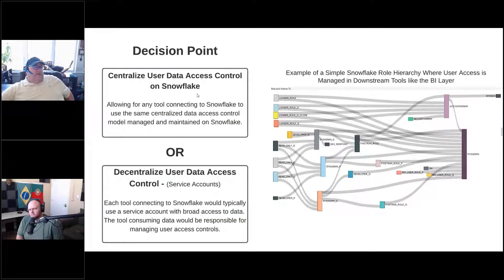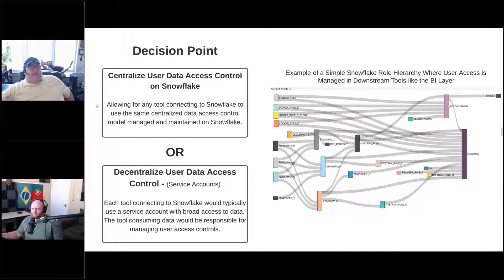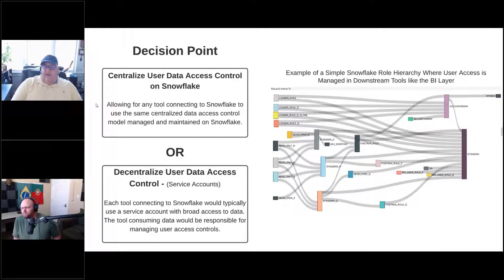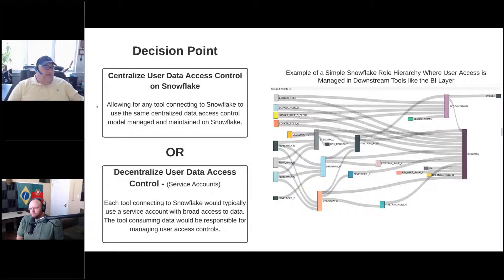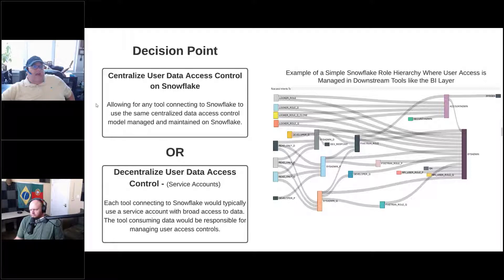There are a couple of different ways, and Jared and Arkady both touched on these. We can centralize user data access in Snowflake, so any tool connecting to Snowflake uses the same data access model. It really doesn't matter what it is. If you've got multiple BI tools — Power BI, Looker, Tableau — instead of rebuilding that access control and security model in each one of those tools, we create the access control model in Snowflake.